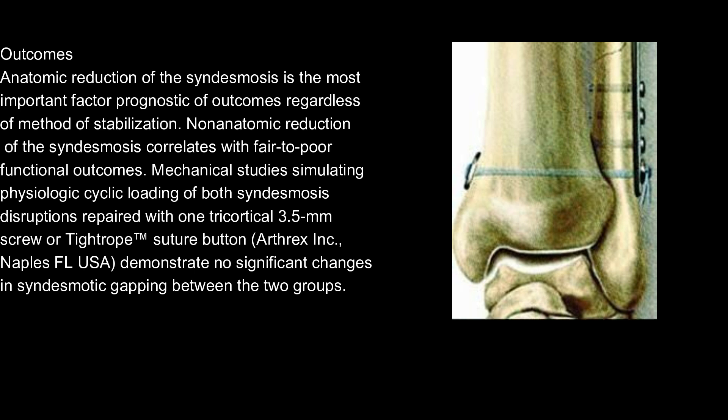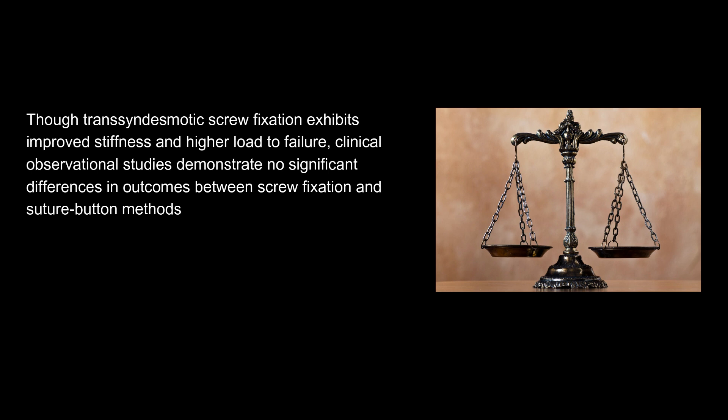Outcomes: Anatomic reduction of the syndesmosis is the most important prognostic factor for outcomes, regardless of method of stabilization. Non-anatomic reduction correlates with fair to poor functional outcomes. Mechanical studies simulating physiologic cyclic loading of syndesmosis disruptions repaired with one tricortical 3.5 mm screw or tightrope suture button (Arthrex Inc., Naples, Florida, USA) demonstrate no significant changes in syndesmotic gapping between the two groups. Though transcyndesmotic screw fixation exhibits improved stiffness and higher load to failure, clinical observational studies demonstrate no significant differences in outcomes between screw fixation and suture button methods.